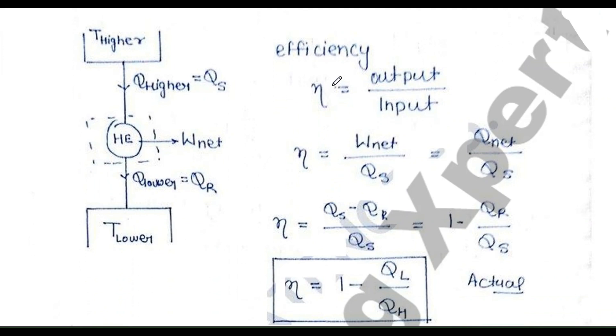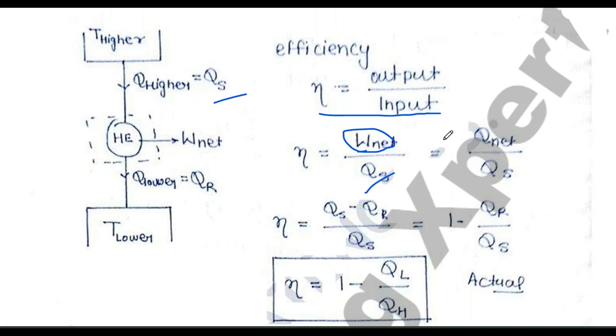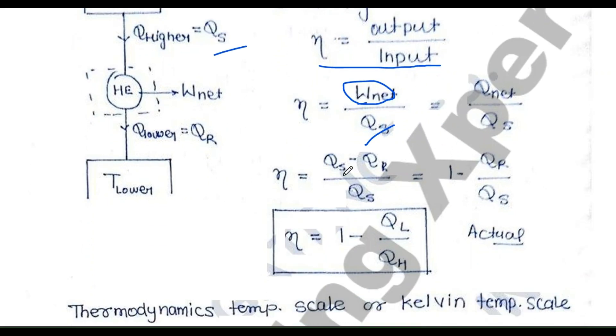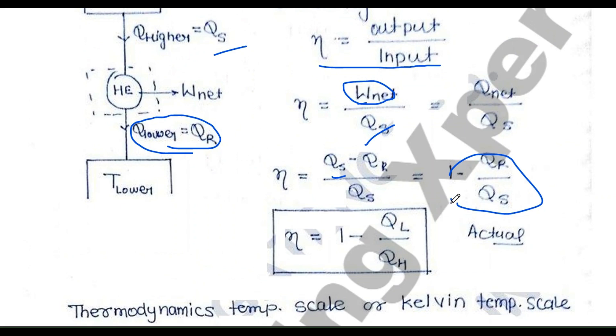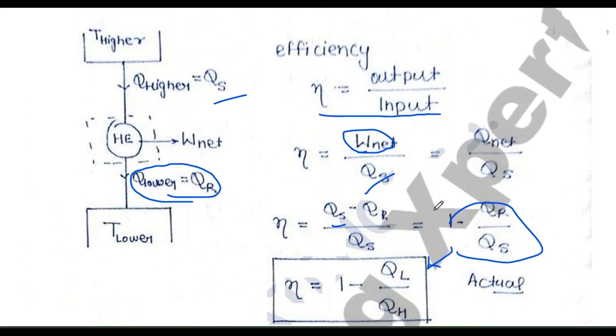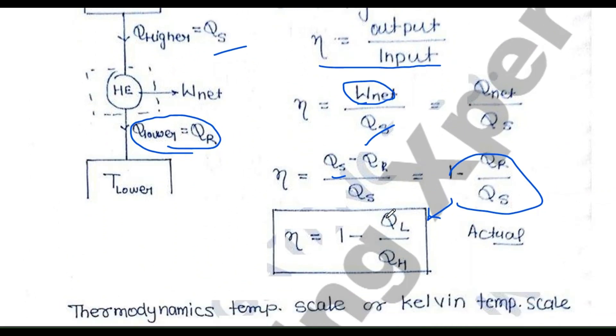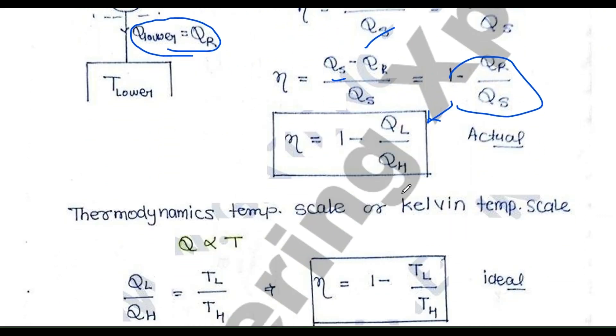This is the formula for efficiency. Efficiency equals output by input. Output is network done, Qs is the input. This can be written as (Qs - Qr)/Qs or 1 - Qr/Qs.